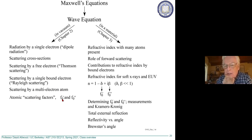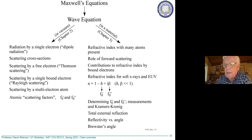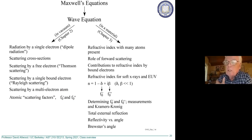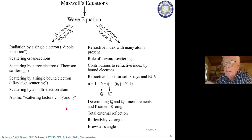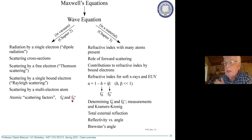This brings us to atomic scattering factors, written as f₀, f′, and f″. The real part of the scattering is f₀ and f′, while f″ is the imaginary part representing absorption. The subscript zero has a special meaning where the wavelength doesn't matter — for soft X-rays the wavelength is much larger than the atom, but even in the hard X-ray region, the forward scattering has no wavelength dependence.